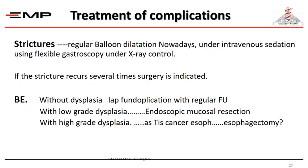Treatment of complications includes strictures managed by regular balloon dilatation under fluoroscopy. If the stricture recurs several times despite regular dilatation, surgery is indicated. Barrett's esophagus management depends on whether dysplasia is present. Without dysplasia, laparoscopic fundoplication with regular follow-up is appropriate. With low-grade dysplasia, endoscopic mucosal resection of the abnormal mucosa is performed. High-grade dysplasia is treated like carcinoma in situ, and esophagectomy may be needed.